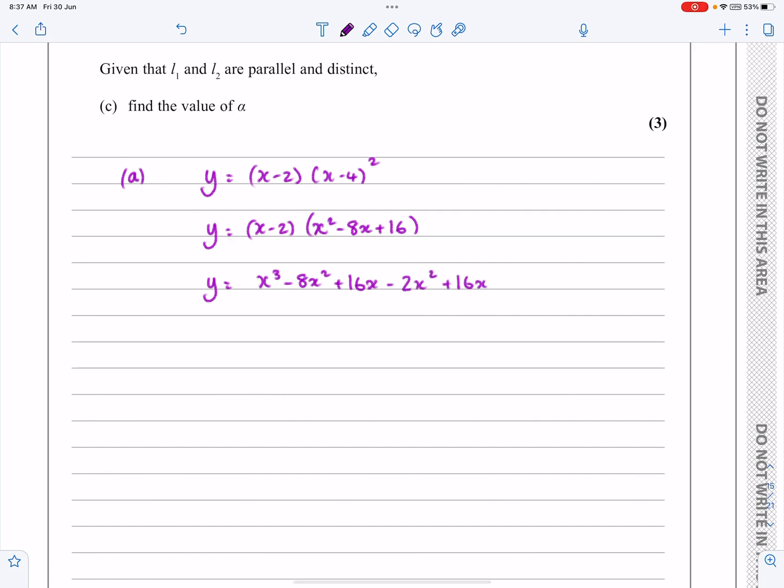x times all of it will give me x cubed minus 8x squared plus 16x, and then minus 2 times all of the second bracket is going to give me minus 2x squared. Be careful here. Plus 16x, minus 32, and then that should all tidy up too.